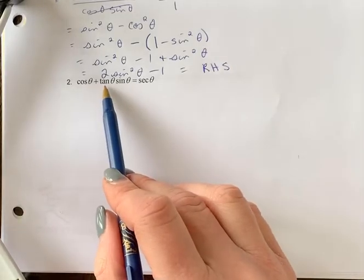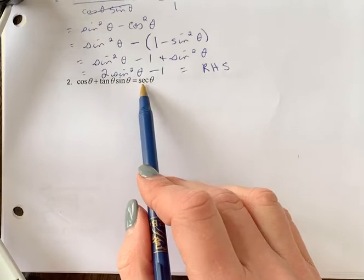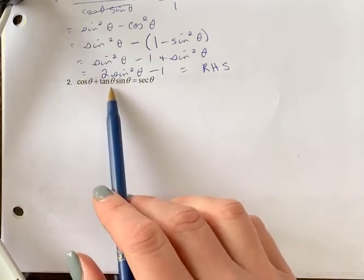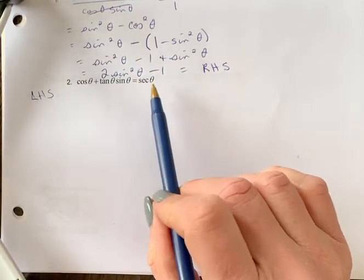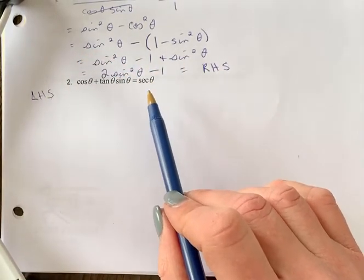Number two: cos θ + tan θ sin θ = sec θ. I find there's a little bit more to work with on the left-hand side, so I'm going to do that. On the right-hand side, I'm going to keep in the back of my mind secant θ is 1/cos θ. When I'm getting to 1/cos θ, I know I'm almost at my answer.